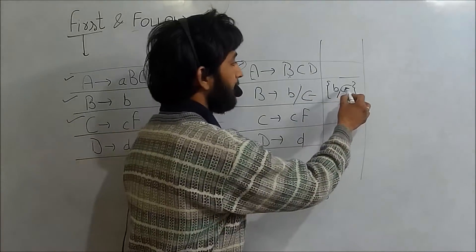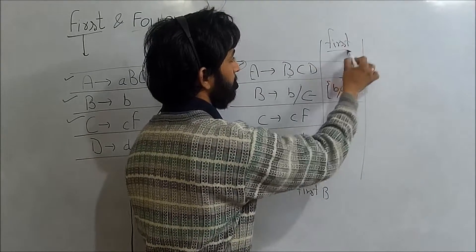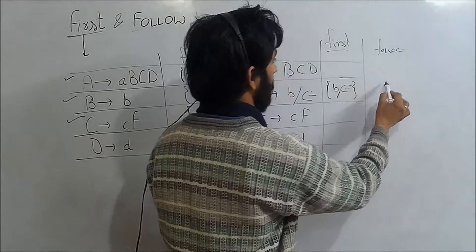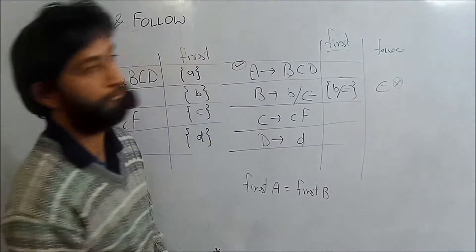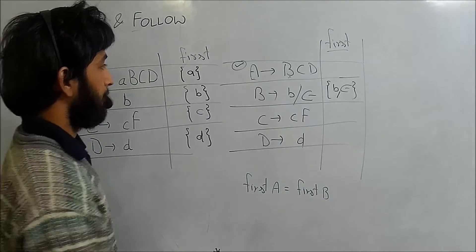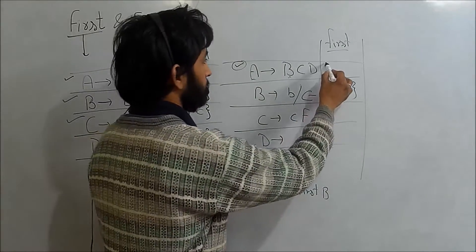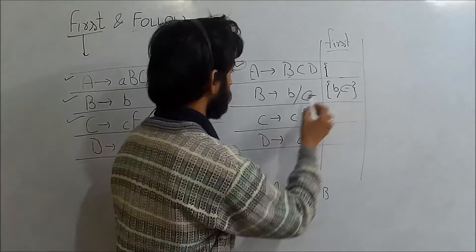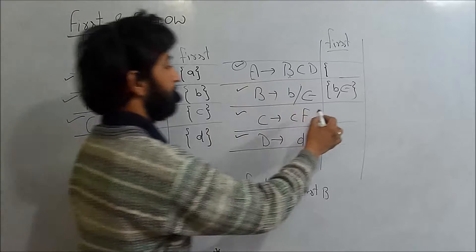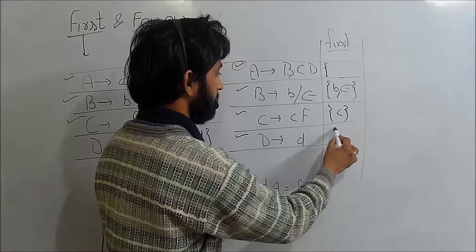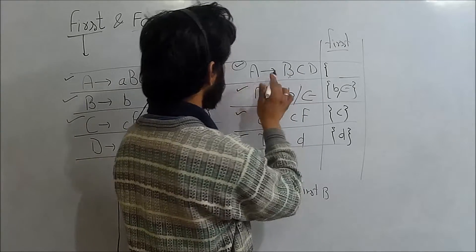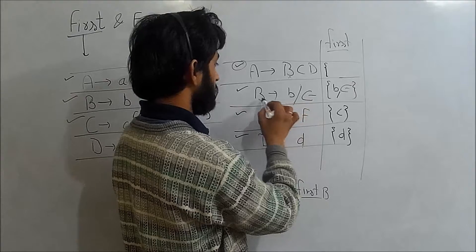One important thing to note: we add epsilon when finding FIRST, but in the case of FOLLOW we will not include epsilon. So epsilon is not included in FOLLOW. FIRST of C will be 'c' and FIRST of D will be small 'd'. Now let us find FIRST of A. As I said, FIRST of A will be FIRST of B.